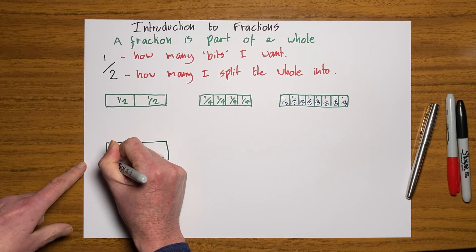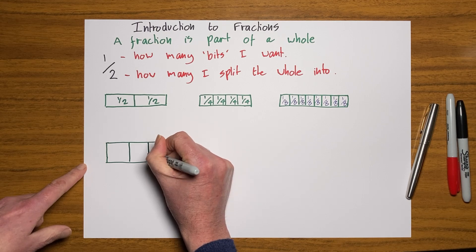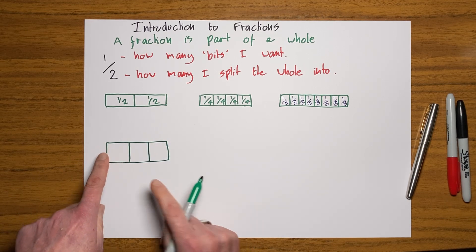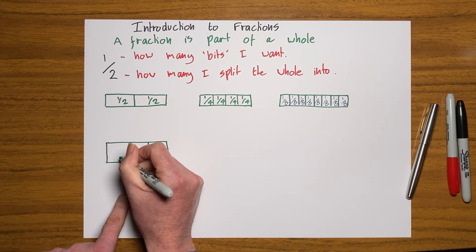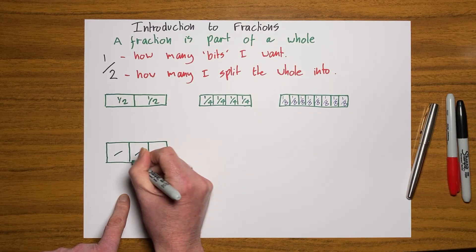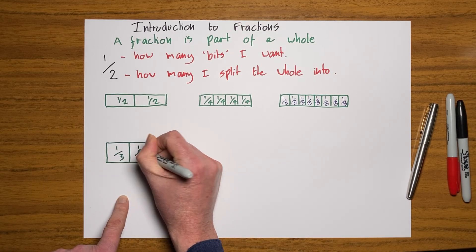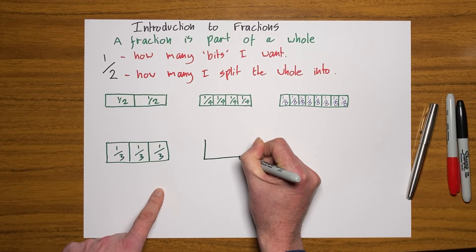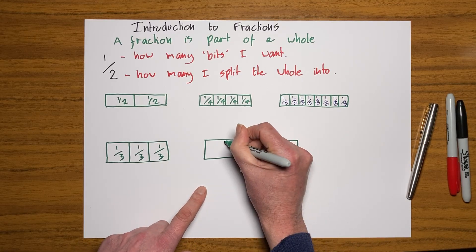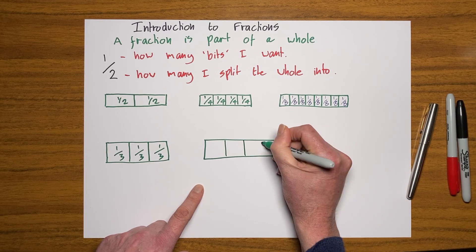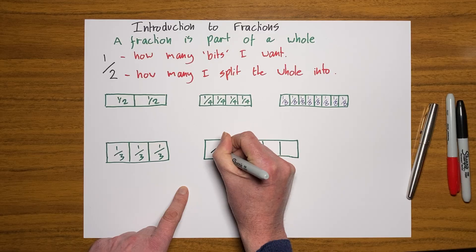Here's my next oblong. Let's split this one into three groups — these should be exactly the same size, I'm just doing it by eye so it's a bit off. I've split the whole into three, so the bottom number must be three, and each one of those is one third. Let's do this one into five: one, two, three, four, five. So each one of these is worth one fifth.